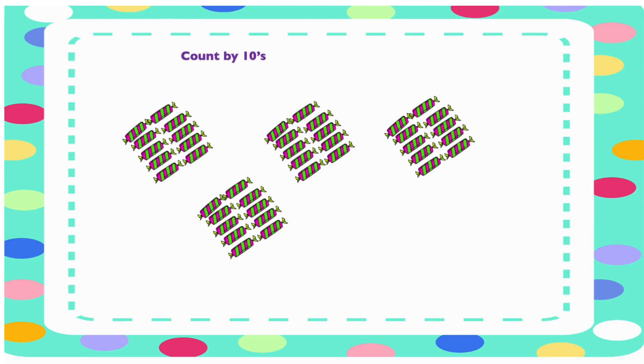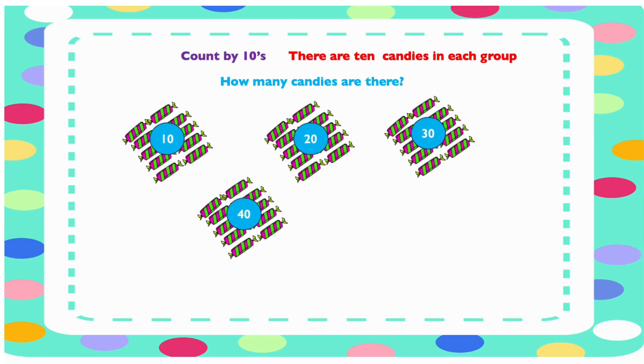Count by tens. There are 10 candies in each group here. How many candies do we have all together? Let's count them and find out how many there are. 10, 20, 30, 40. So we have 40 candies all together.